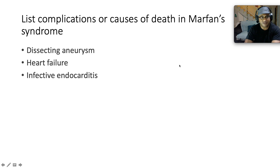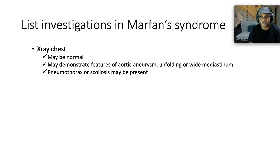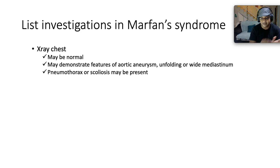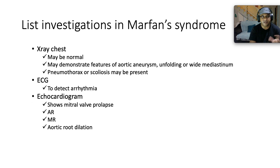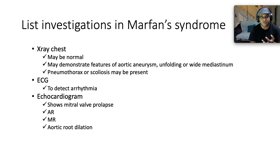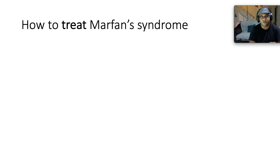One of the most serious complications and causes of death in Marfan's syndrome is the dissecting aneurysm, along with heart failure and infective endocarditis. For investigations: start with a chest X-ray, which may be normal but may also demonstrate features of aortic aneurysm, unfolding or a widened mediastinum, pneumothorax, or scoliosis on the back of cystic lung disease. An ECG is done to detect any arrhythmia. An echocardiogram may show mitral valve prolapse and aortic regurgitation — you want to establish the dimensions of the aortic root. CT or MRI is used to see aortic dilatation.